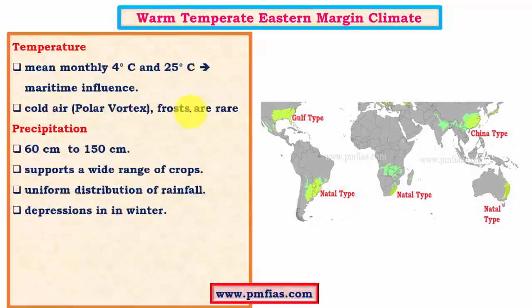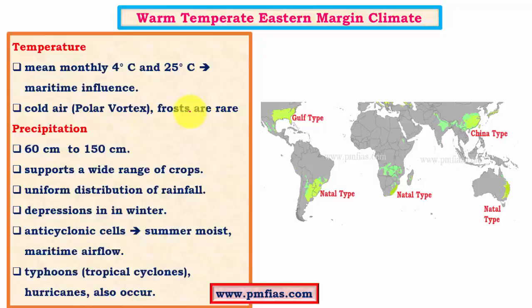Coming to climatic conditions, here the mean monthly temperature is between 4 to 25 degrees Celsius and the climate is very moderate because of the maritime influence. During extreme cold break events like the polar vortex, there might be frost. Frost is nothing but frozen soil, and this is very uncommon or less frequent in this particular type of climatic region.